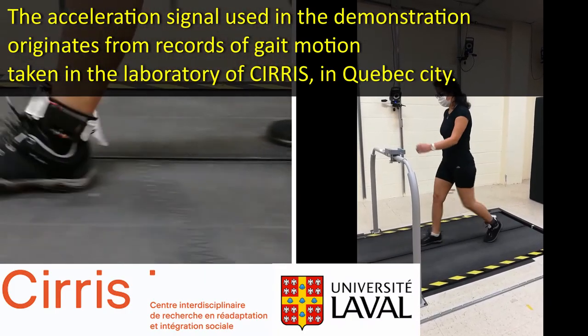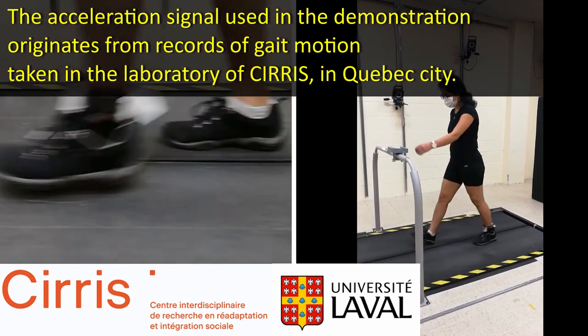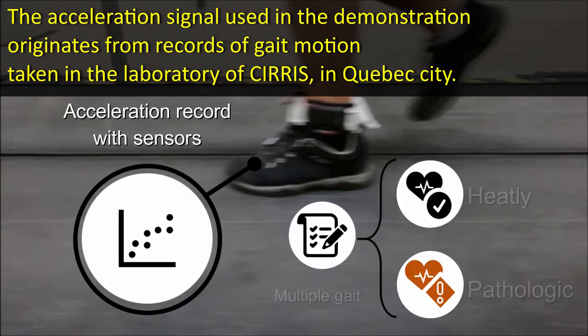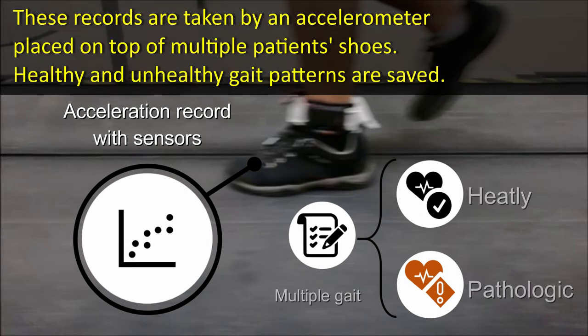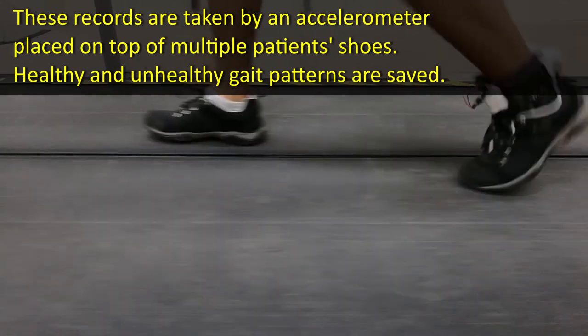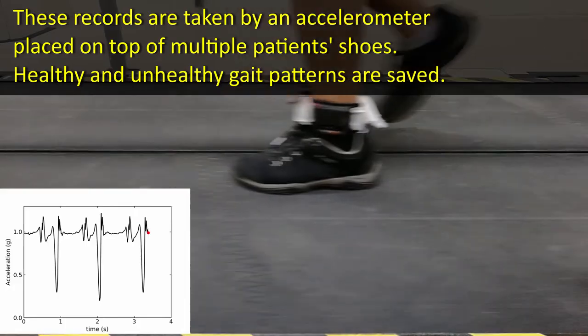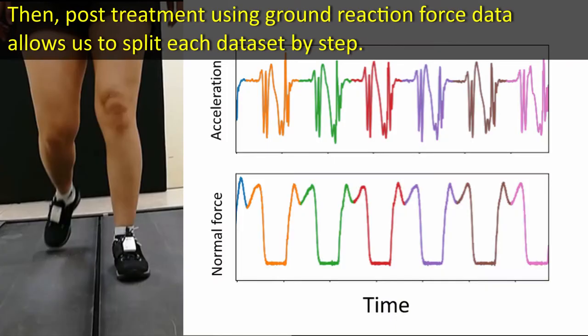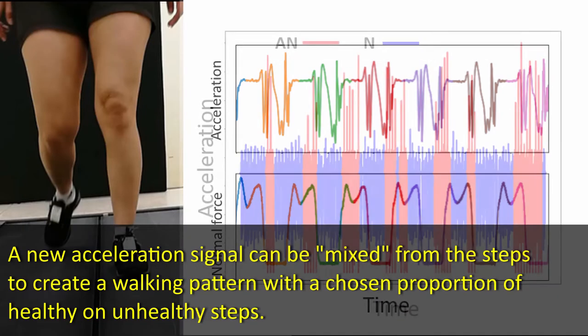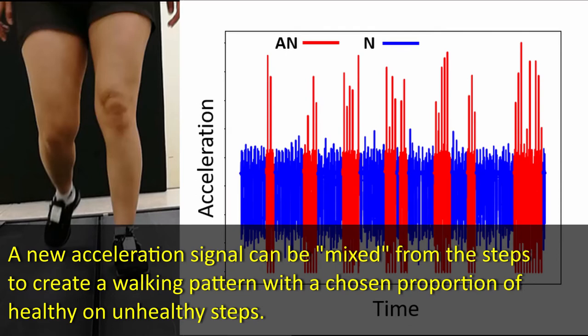The acceleration signal used in the demonstration originates from records of gait motion taken in the laboratory of CIRIS in Quebec City. These records are taken by an accelerometer placed on top of multiple patients' shoes. Both healthy and unhealthy gait patterns are saved. Then, post-treatment using ground-reaction force data allows us to split each dataset by step. A new acceleration signal can be mixed from the steps to create a walking pattern with a chosen proportion of healthy and unhealthy steps.